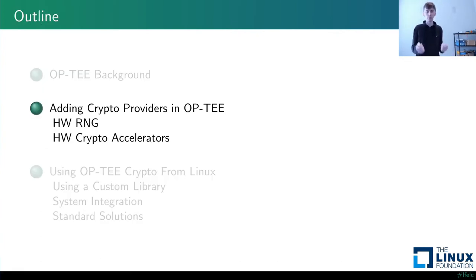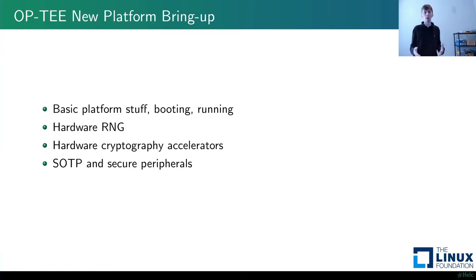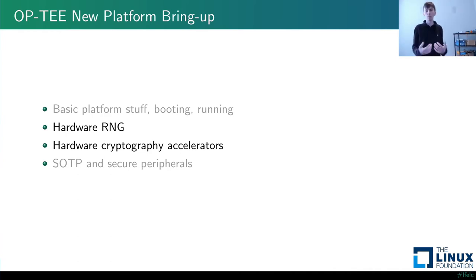Now that we're motivated and believe OPTI is a good idea, let's talk about actually building out pieces of it and adding functionality. If we're adding OPTI to a new platform, there are really four steps: basic platform bring-up, adding the hardware RNG, enabling hardware accelerators, and then enabling secure peripherals specific to your application. We're going to focus on the middle two steps, assuming your platform already works.